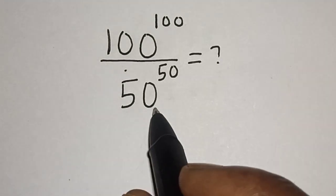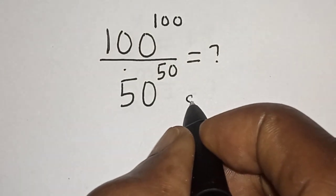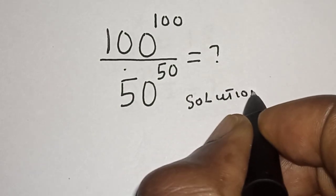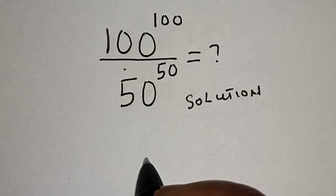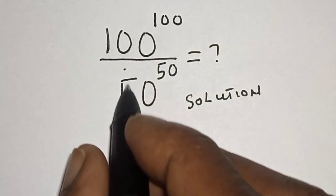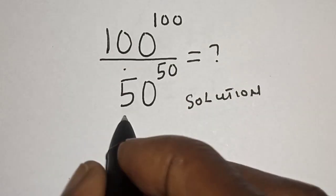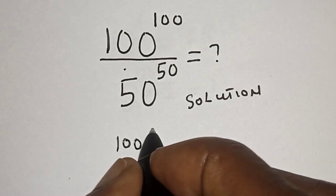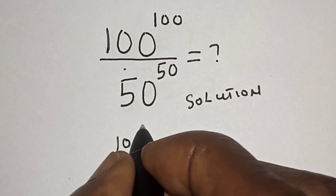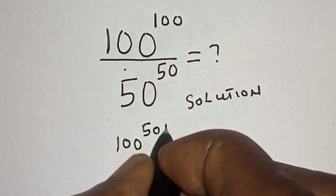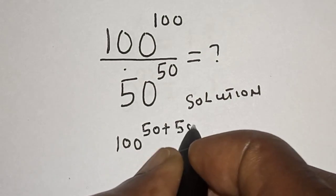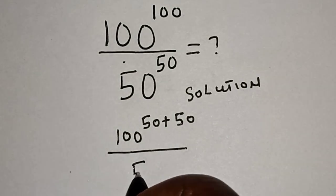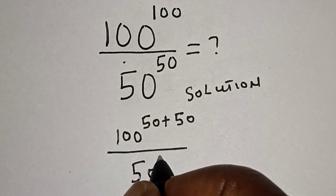Like, Share, Comment and Subscribe. Solution: 100 to the power of 100 can be expressed as 100 to the power of 50 plus 50, divided by 50 to the power of 50.